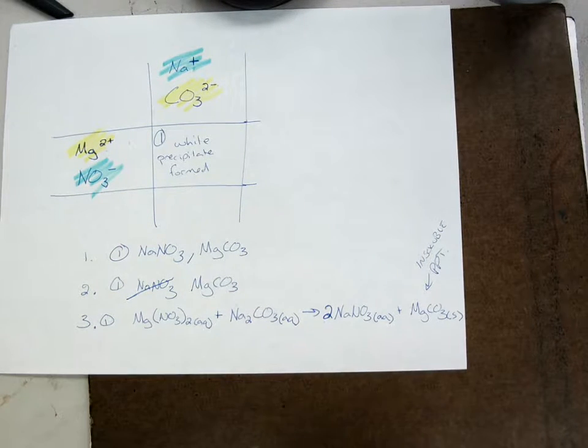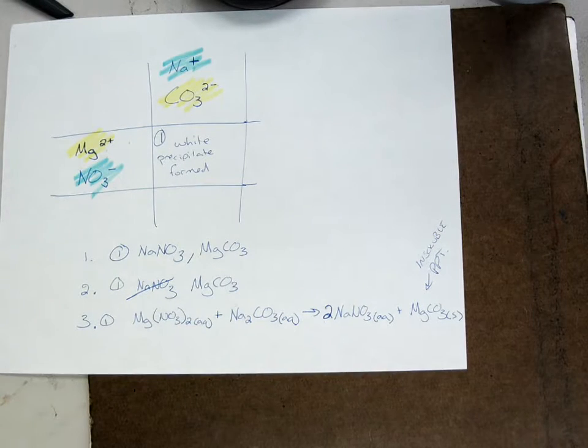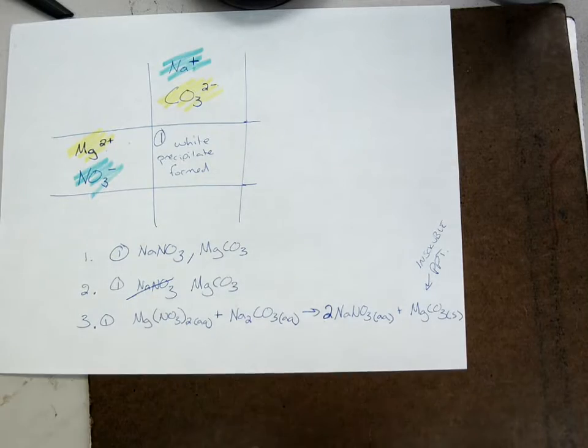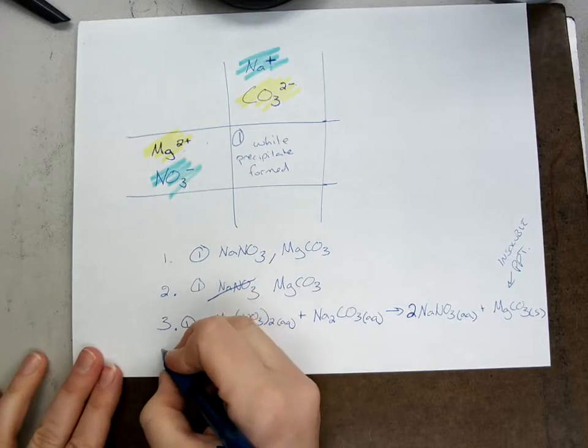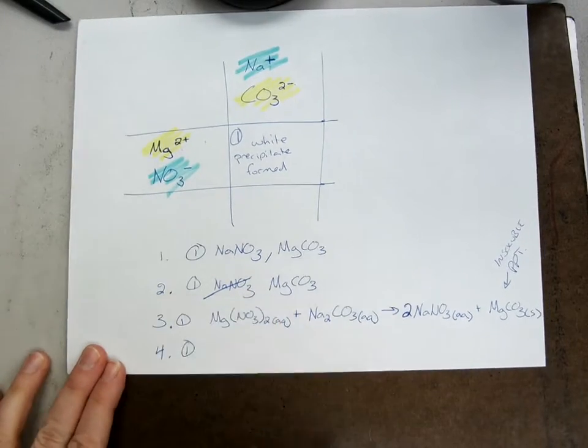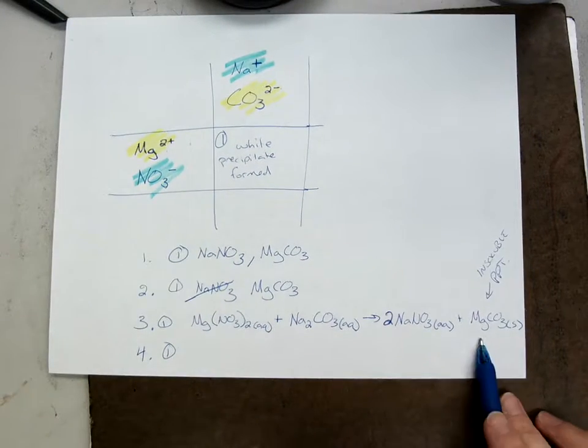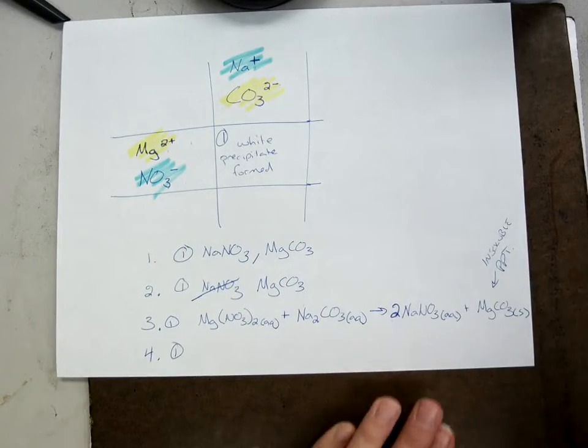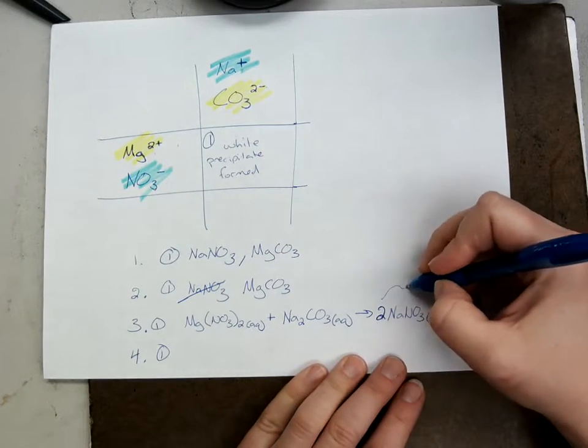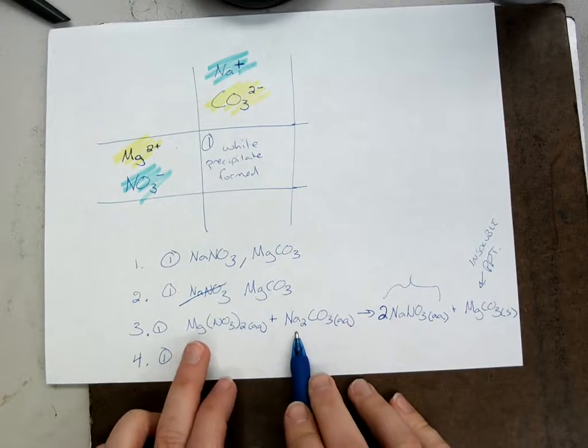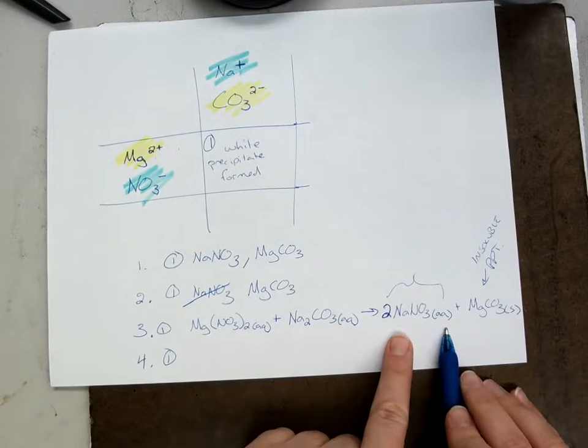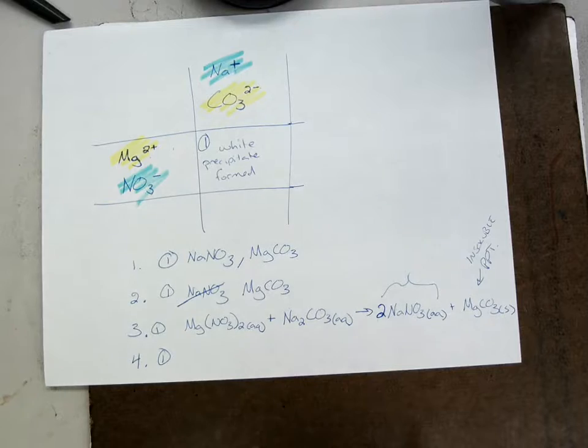Question 4 says to write a net ionic equation. There's an example in the front of your lab. On the example you'll see that only the ions that form the precipitate go into the net ionic equation. These guys, see the sodium and the nitrate, how they're aqueous? Before the reaction they were aqueous, after the reaction they're aqueous. They're not really doing anything.